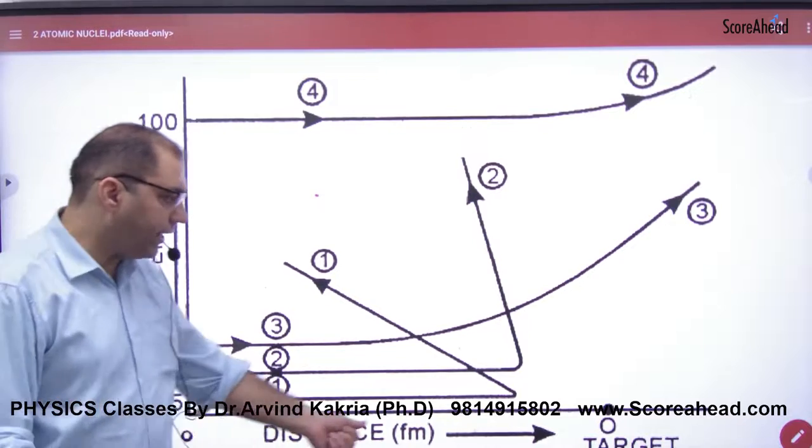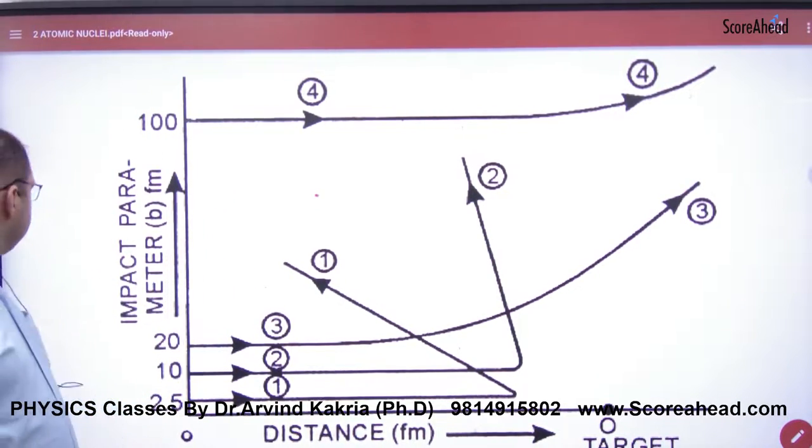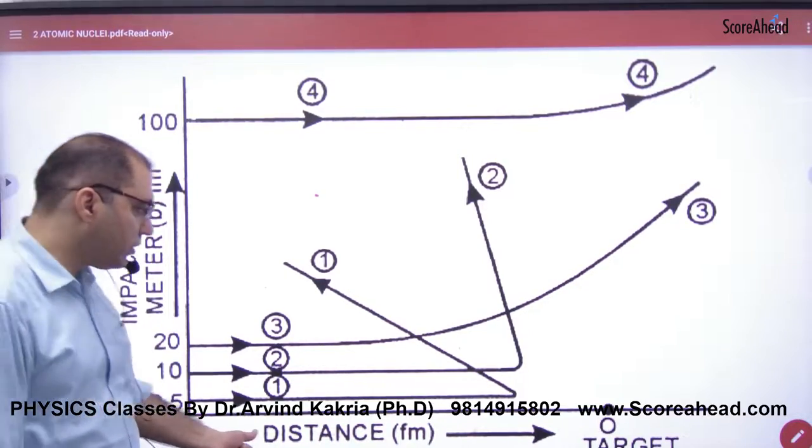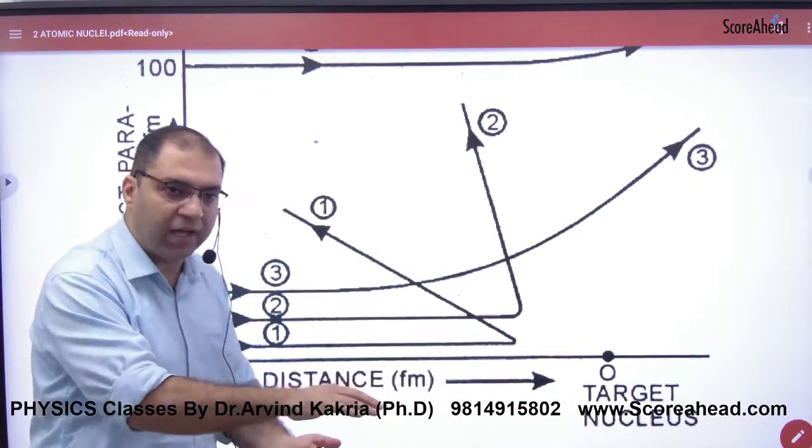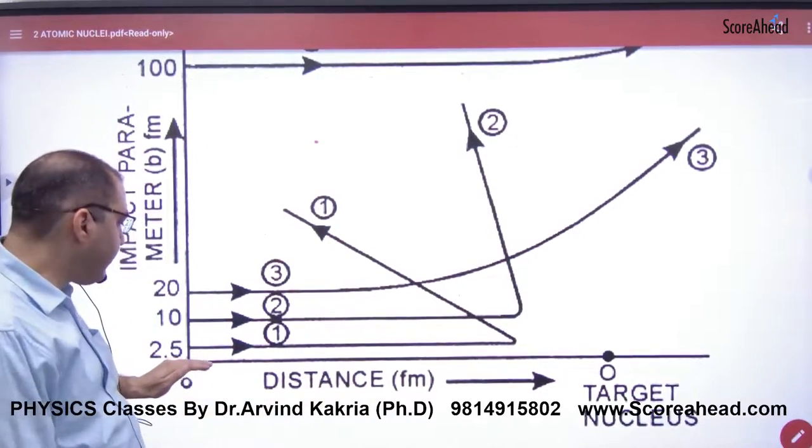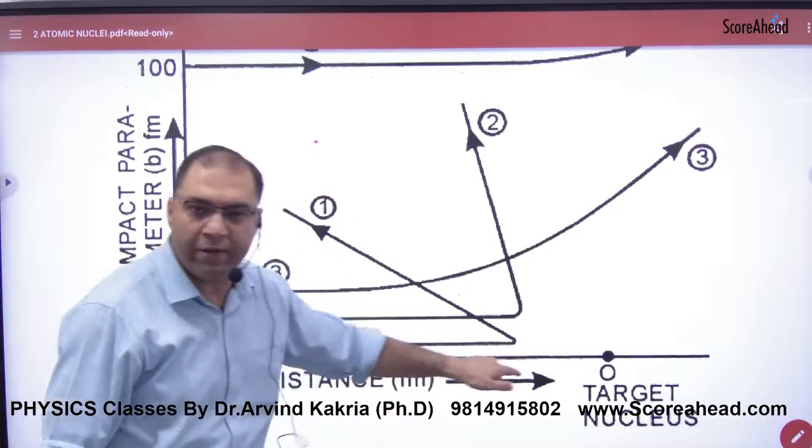In this graph suppose this is a target, this is a distance, and this is an impact parameter. So basically it says that this is a target. Right? So the target, the angle is 180. So the impact parameter is 0. Look, the impact parameter is 0. So what is the target here? 180.